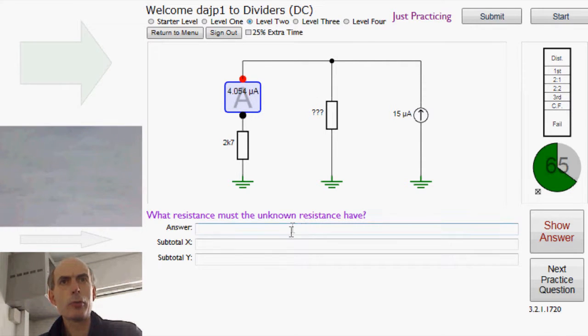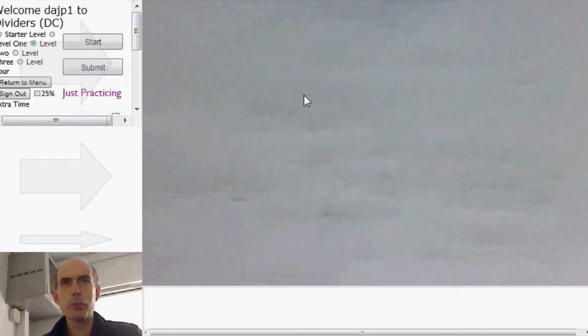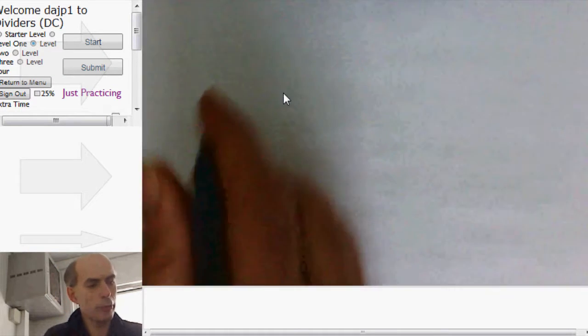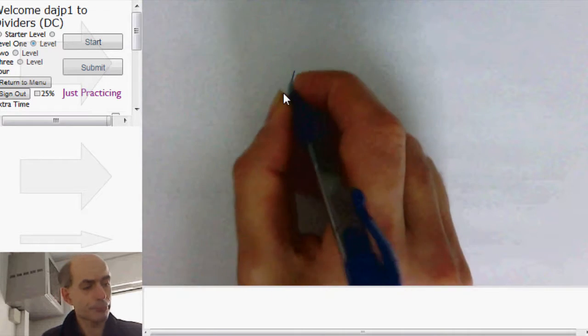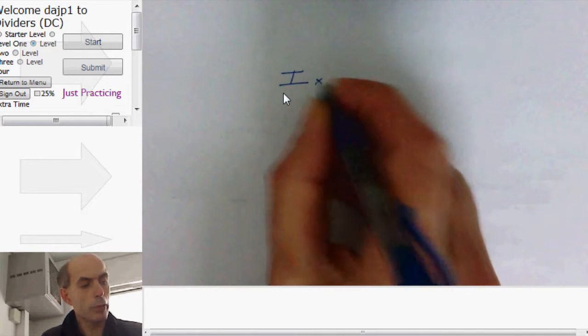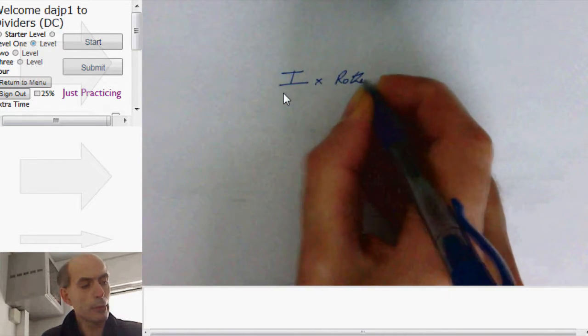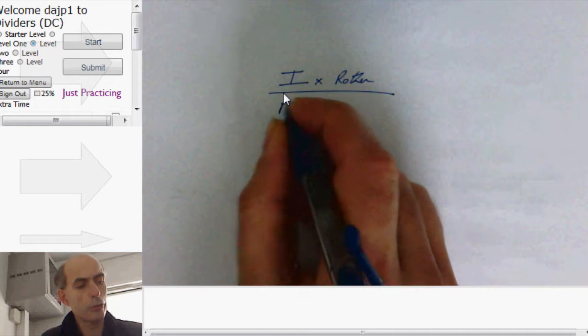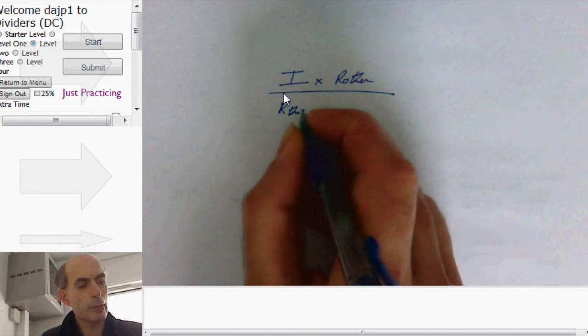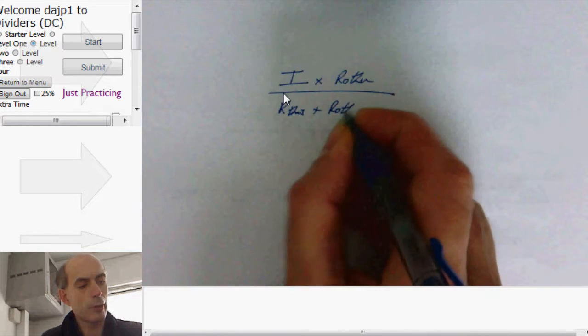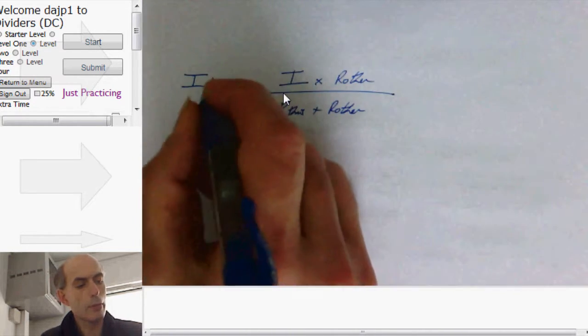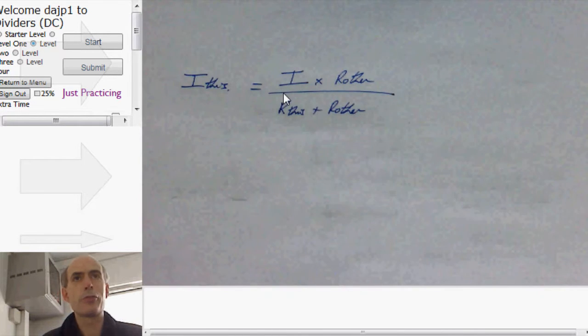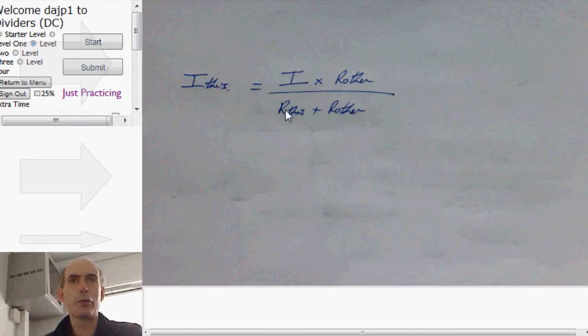The standard formula for a current divider, as you may remember, is that the current flowing through a resistor is the total current times the other resistor divided by the total resistance. R this plus R other. And that's the current through this resistor, where I this is the current through R this.